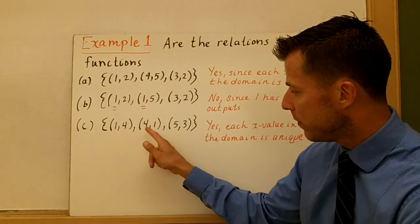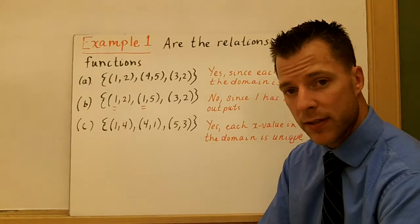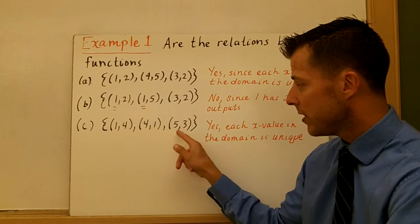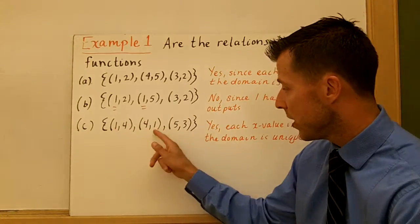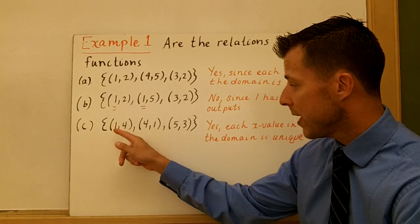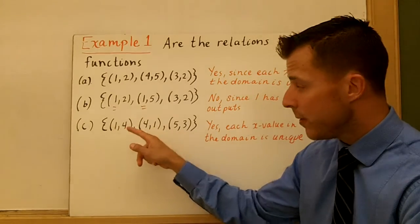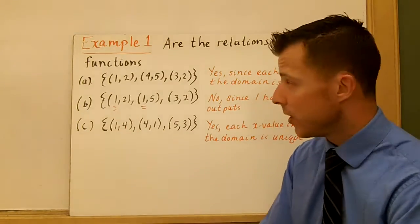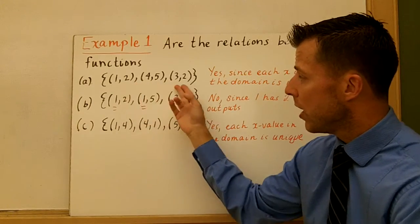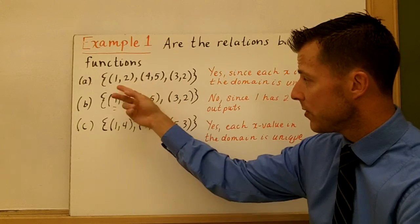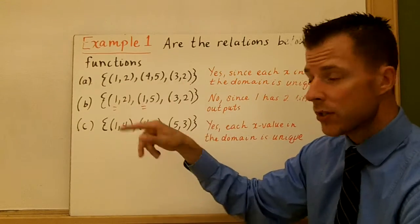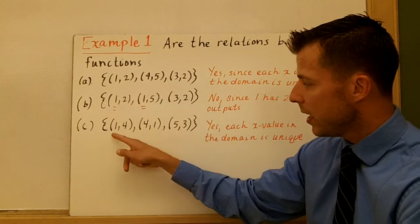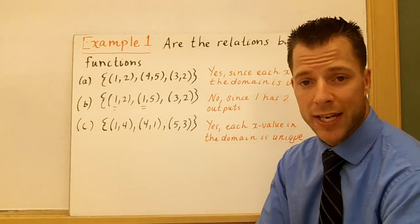So the second relation is not a function because one x value repeats and it has two different y values. In the third one we see one, four, and five. The x values are all different. So yeah, that's a function because each domain value is unique. If the x values are all different, it doesn't matter what the y values are. The y value can repeat. That's fine. So it doesn't matter if this was one, four, and this is zero, four. Because those x's are different, you're going to have a function. And so it doesn't matter what the y values are. So again, this first example shows relations are one of our ways to represent functions as ordered pairs.